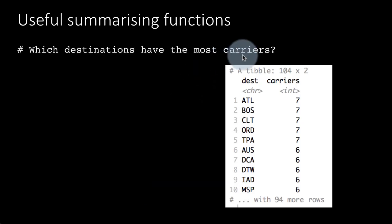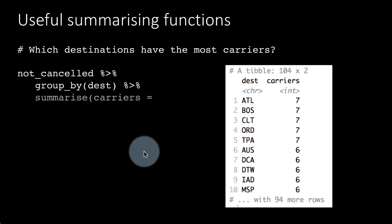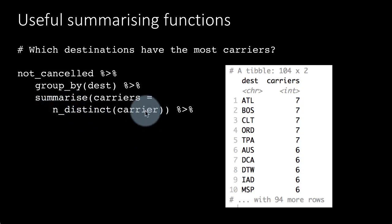So which destinations have the most carriers? It's quite easy. We can group it by destination and just find n_distinct carrier for each destination. So we are finding how many distinct carriers are there for each destination. Very easy to find out, and then we can arrange by descending order of carriers. So we find that Atlanta, Boston, Charlotte, Chicago, etc. have the maximum number of carriers. There are seven carriers and there are six and so on to some other places.